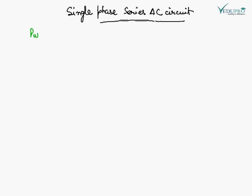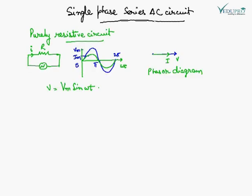In a purely resistive circuit, there is only resistance. The applied voltage is VM and the corresponding current waveform is IM, shown in the phasor diagram. When current flows through a pure resistance circuit, no back EMF is set up. Therefore, the applied voltage has to overcome only the ohmic drop IR, so IR is equal to V.